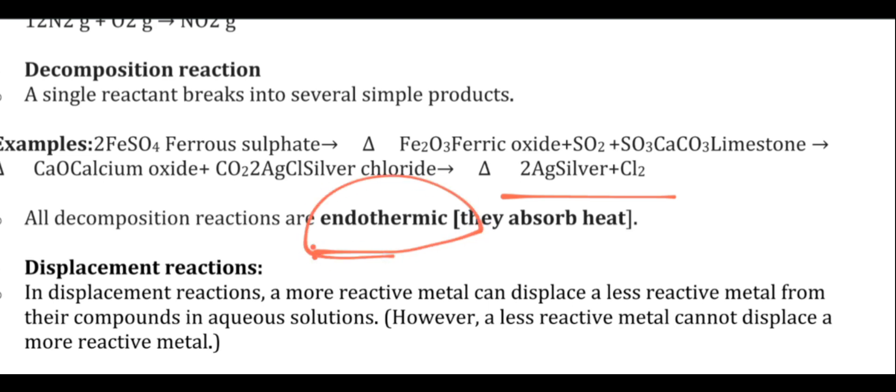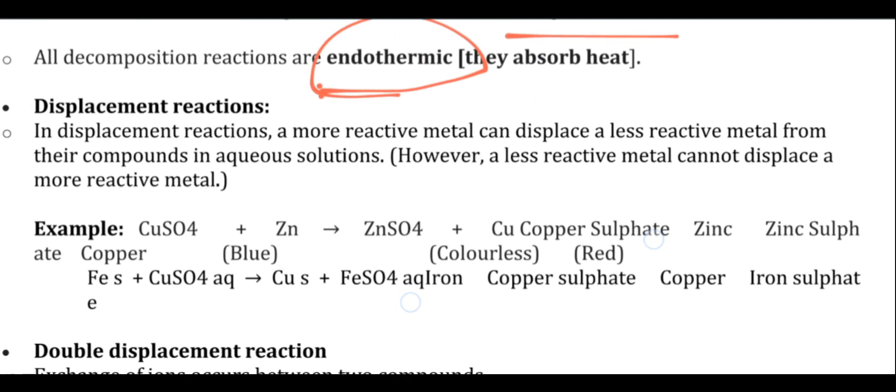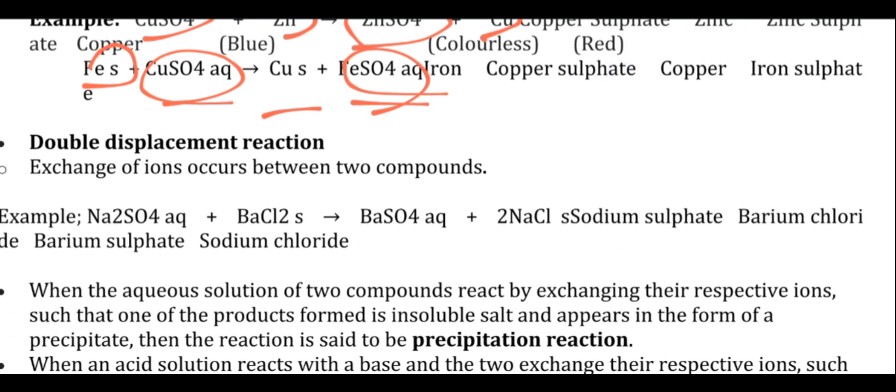All decomposition reactions are endothermic in nature. Displacement reactions occur when a more reactive metal can displace a less reactive metal. For this, you need to know the reactivity series. More reactive metals displace the less reactive ones. For example, copper sulfate with zinc gives zinc sulfate and copper is released. If we react iron with copper sulfate, copper and iron sulfate form.